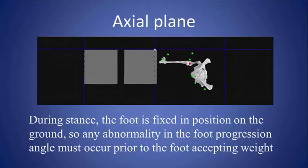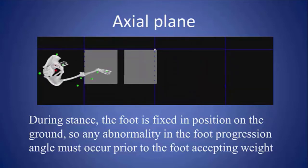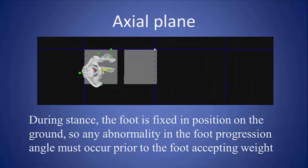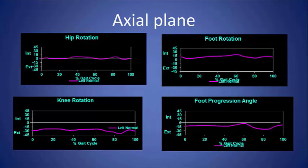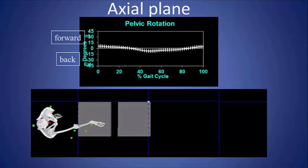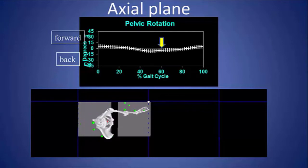The stance phase limb becomes relatively posterior or retracted as the pelvis moves forward, while the swing phase limb becomes more anterior or protracted. The curves are fairly straight — there's not much movement in the axial plane, with the exception of that pelvic rotation moving forward in swing phase.